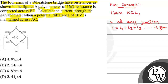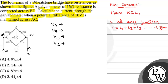Now, if we take point C as 0 voltage, then the voltage of point A will be 10 volt, as the potential difference between these two points is 10 volt. So, voltage of point A is equal to 10 volt and that of point C is 0 volt. We define Va, Vb, Vc, and Vd as the voltages at points A, B, C, and D respectively.